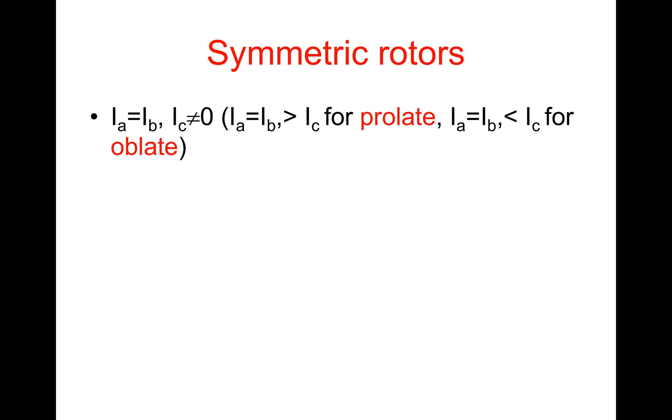Now let's look at symmetric rotors. In symmetric rotors, Ia equals Ib but Ic is not zero. That means Ia equals Ib which is greater than Ic for prolate, and Ia equals Ib which is less than Ic for oblate. C is the unique axis in this case.